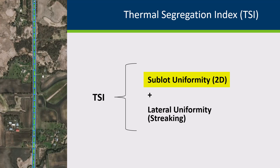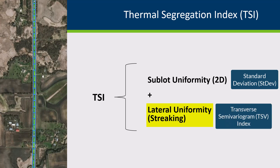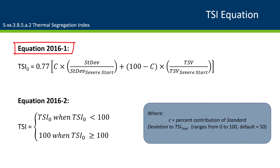TSI is a composite index of the variability of surface temperature measurements, calculated using the standard deviation and the transverse variability of surface temperature measurements as calculated with the Transverse Semi-Variogram (TSV) index. The TSV allows for identification of the presence of longitudinal thermal streaking, which can often be attributed to paver setup or driving on windrows. Equations 2016-1 and 2016-2 present the TSI equation, combining the standard deviation and TSV index.